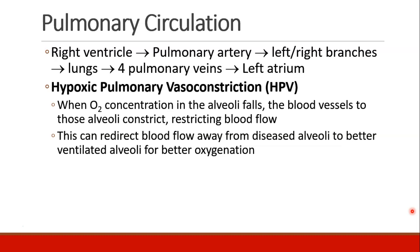One concept we can introduce now is called hypoxic pulmonary vasoconstriction. The idea is that when the oxygen concentration in the alveoli falls, those alveoli aren't very good oxygenators, and so the blood vessels to those alveoli constrict so that we don't send blood to those poorly functioning alveoli. This redirects blood away from diseased alveoli towards better ventilated alveoli in order to optimize oxygenation and the ratio between ventilation and perfusion.